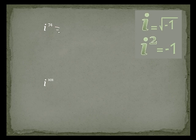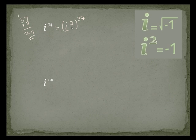Just two more. i to the 74 — that would be i squared to the 37th power. 37 times 2 is 74. i squared is negative 1, so this is negative 1 to the 37th power. A negative 1 raised to an odd power is negative, so we end up with negative 1.